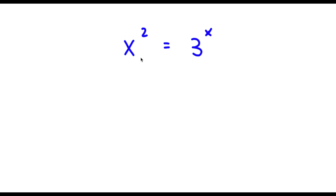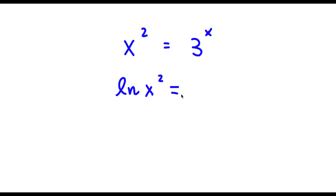Alright, so I have x to the power of 2 is equal to 3 to the power of x. Now the first thing I'm going to do is I'm going to take the natural log or ln on both sides. So now I have ln x squared is equal to ln 3 to the power of x.